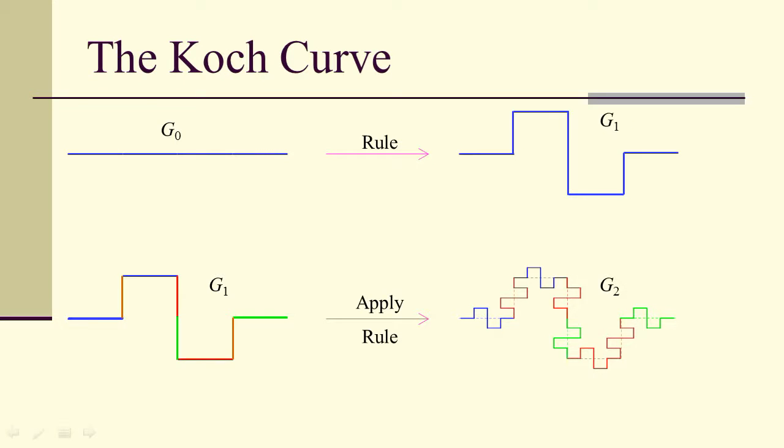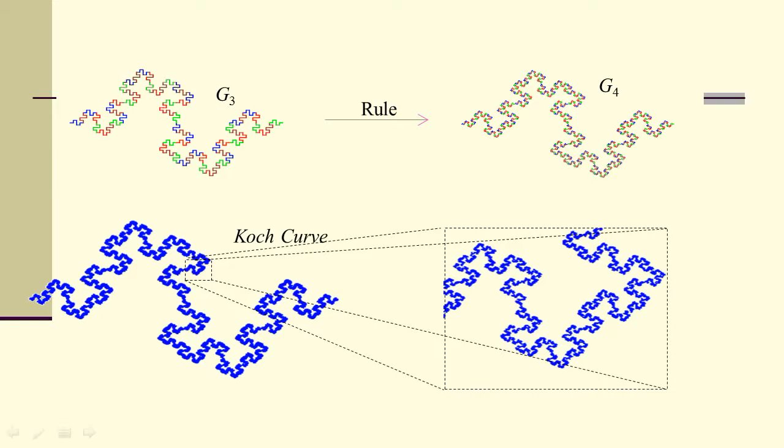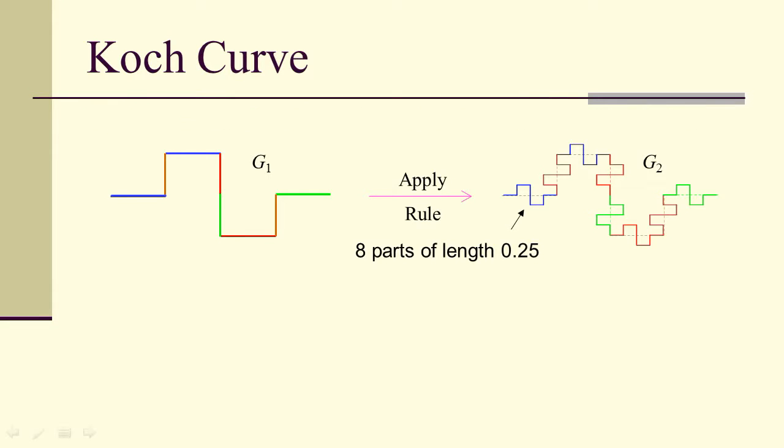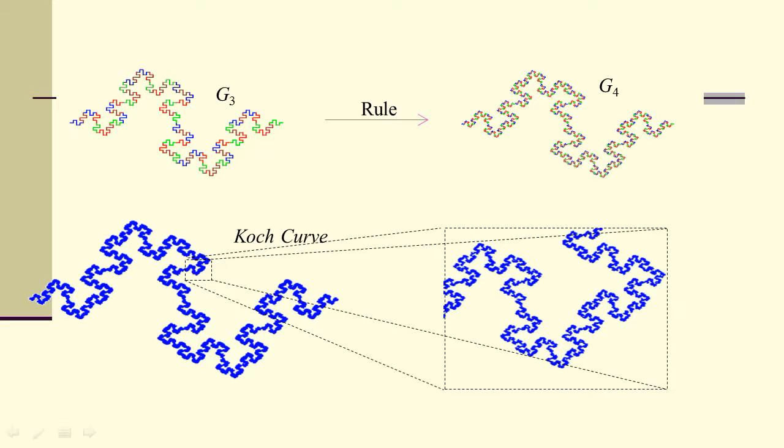If we started with a straight line segment, and we used a rule, an algorithm, where each line segment is replaced by this eight section: over, up, over, down, down, over, up, over, then that means each one of these is a fourth as long as the original, and there are eight of them. If we keep applying this rule to every straight segment, then in the limit, we will converge to what's known as the Koch curve. The Koch curve is a fractal. If you zoom in on a section of it, it looks like the overall, because we keep seeing this iterative rule over and over.